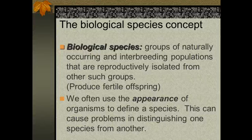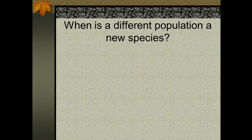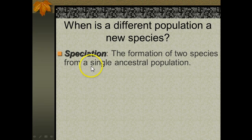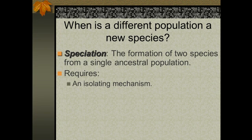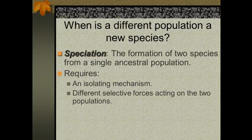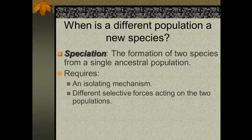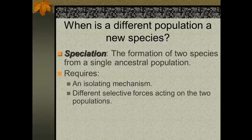We saw a real good example with the meadowlarks. So when does a different population form a new species? There's a process called speciation. Speciation is the process that forms two distinct species from a single ancestral population. There are three different requirements for speciation to take place. First, we need an isolating mechanism — we'll give some examples of those in just a minute. In addition to that, we need different selective forces acting on the two populations. That is to say, natural selection is going to act in different ways because of different foods, different disease organisms, and different predators.